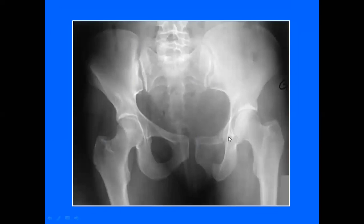On voit aussi l'articulation coxo-fémorale entre le cotyle et la tête fémorale. Ce bassin, comme vous voyez, il est circulaire, arrondi, il forme une ceinture — comme la ceinture scapulaire.